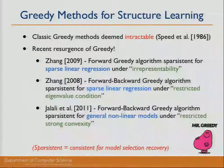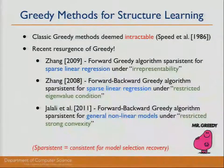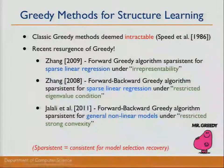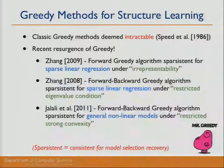There is a rich history of greedy methods for structure learning. Classic greedy methods were often deemed intractable — slow and impractical. However, there has been a recent resurgence. Tong Zhang in 2009 showed a forward greedy algorithm to be sparsistent for sparse linear regression under e-representability, and a forward-backward greedy algorithm under the restricted eigenvalue condition, which is weaker than e-representability. Jalali et al. in NIPS 2011 showed a forward-backward greedy algorithm to be sparsistent for general non-linear models under restricted strong convexity.